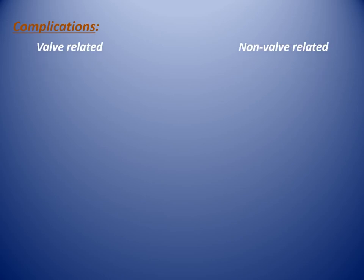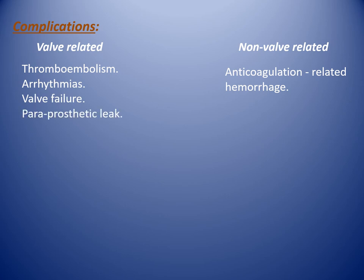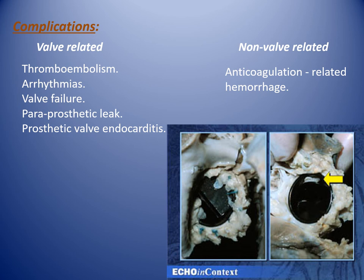Complications of valve prostheses: valve-related — thromboembolism, valve failure, paraprosthetic leak, prosthetic valve endocarditis. Non-valve related — anticoagulation-related hemorrhage.